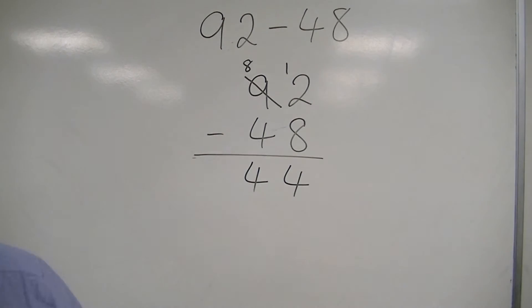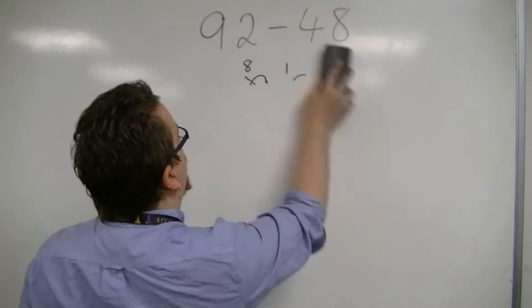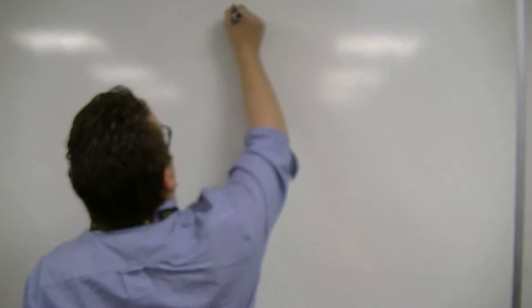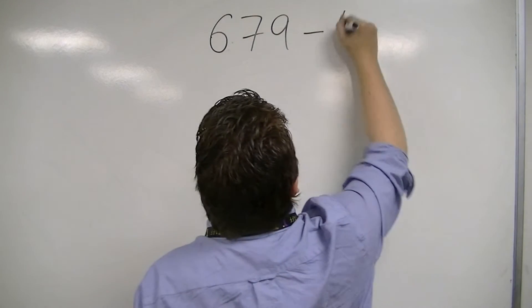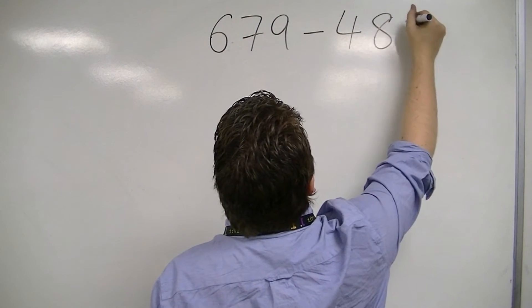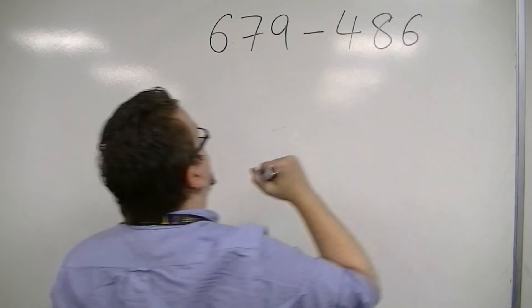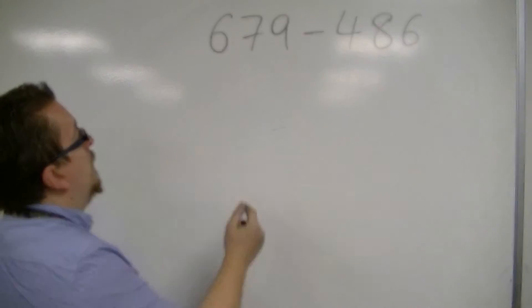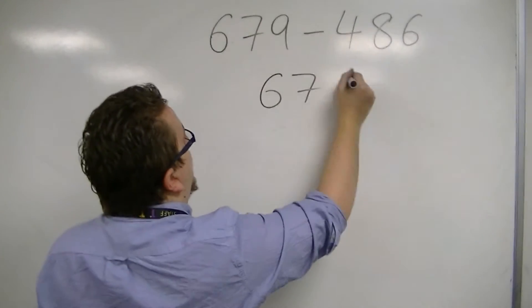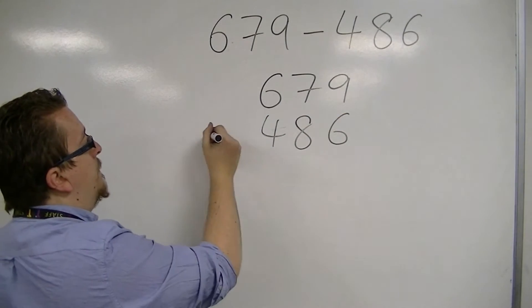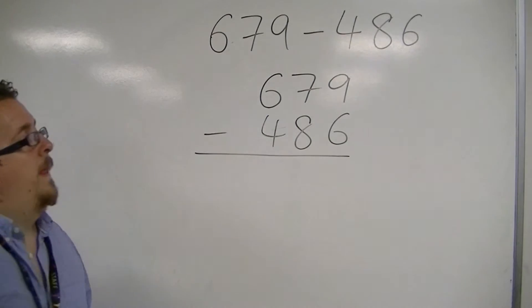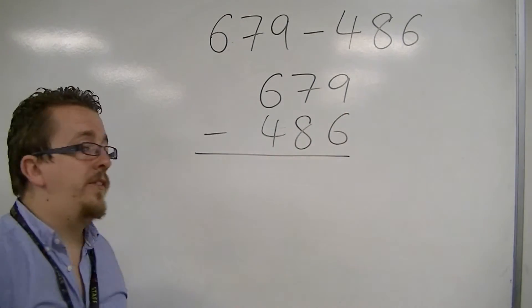If that's the first time you've seen something like that, I'll go through another example. Let's say we've got 679 take away 486. So write it in place value, in order. We have 9 take away 6 is 3.